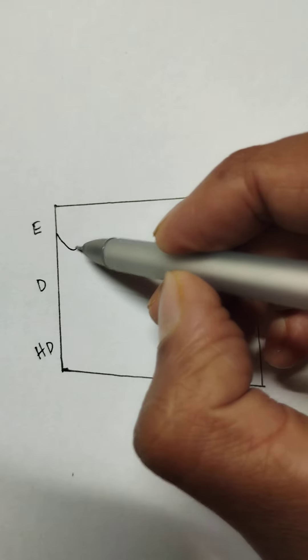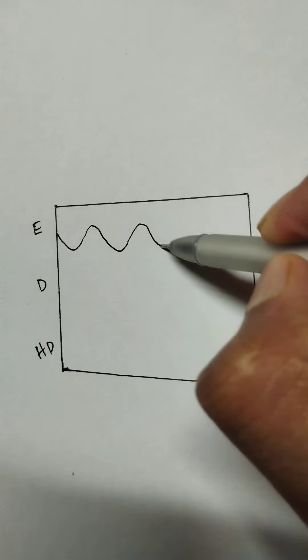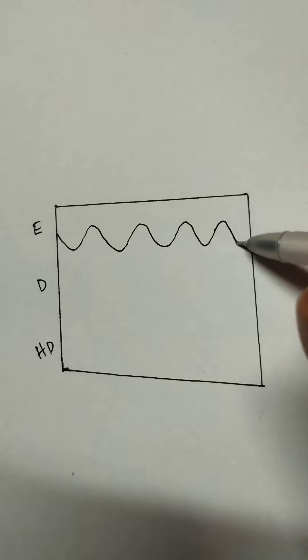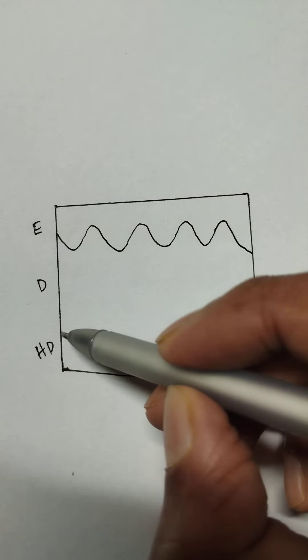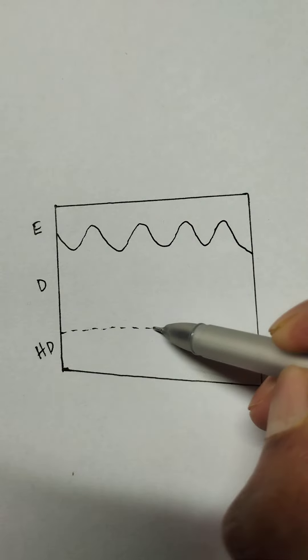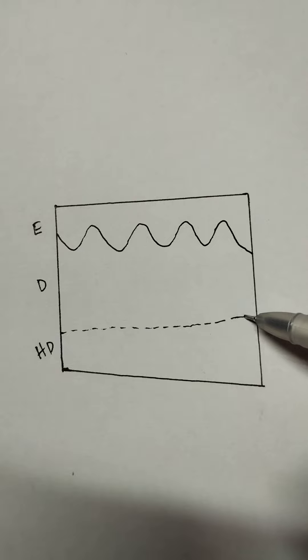This is the epidermis, and this is the hypodermis, which is made up of subcutaneous tissue and has blood vessels.